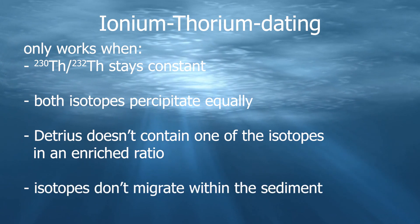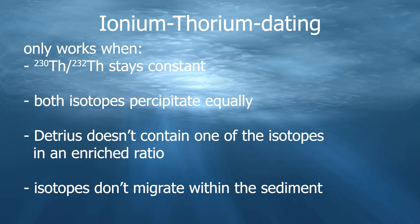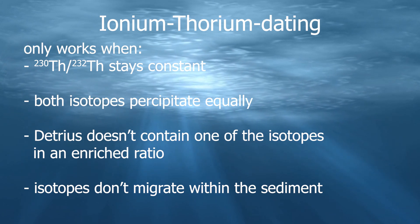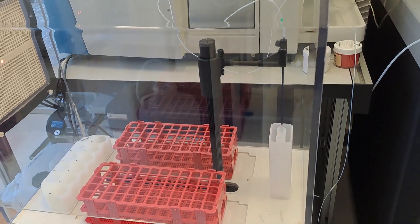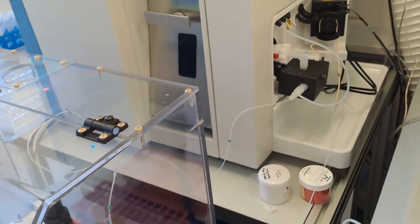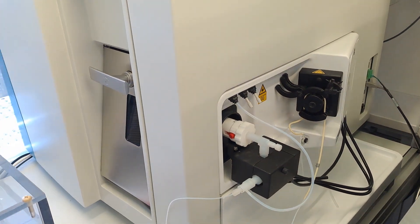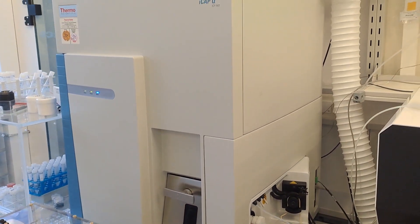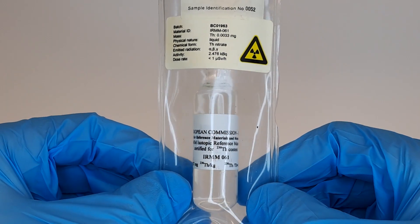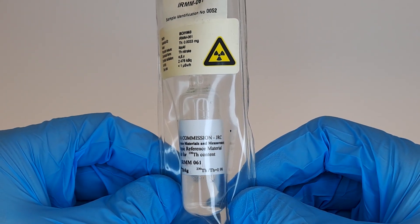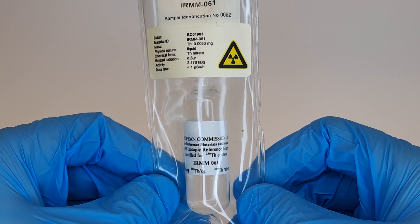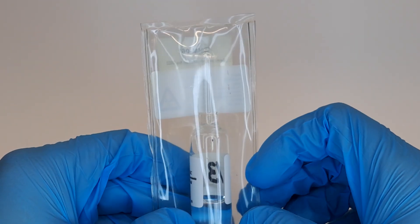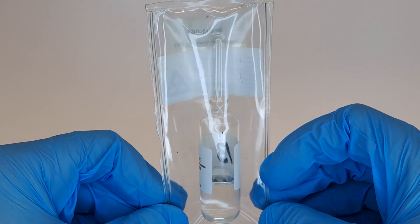And after deposition, the isotopes do not migrate within the sediment. If these criteria are met, the measurements can be relied upon. For the measurements, devices — in this case the ICP-MS — must be calibrated. Calibration requires a standard with a certified isotope ratio to calibrate against. In this case, it's the thorium-230 to 232 ratio with about 0.99 to 1, which is basically 50-50. And this can be used for calibration.